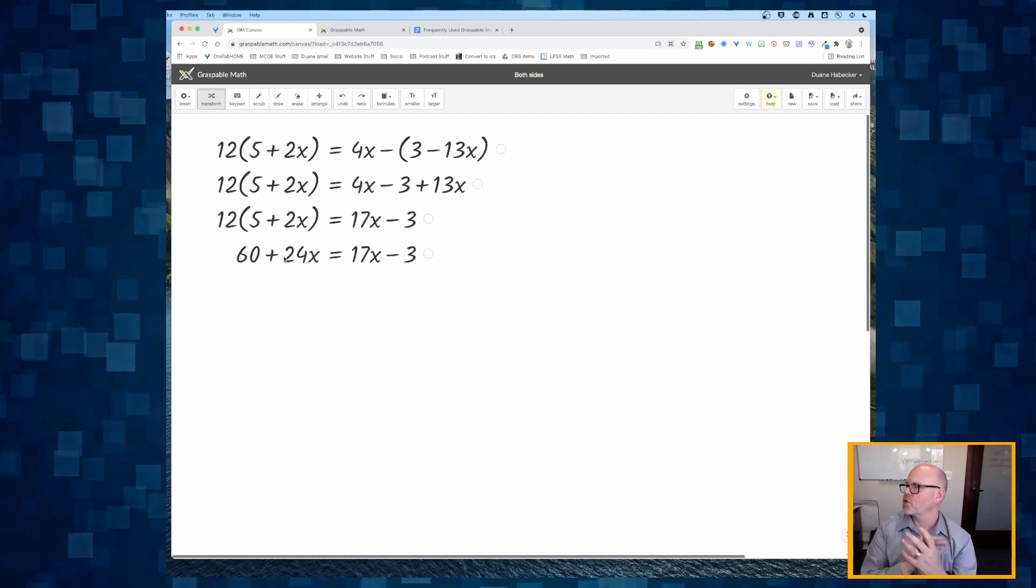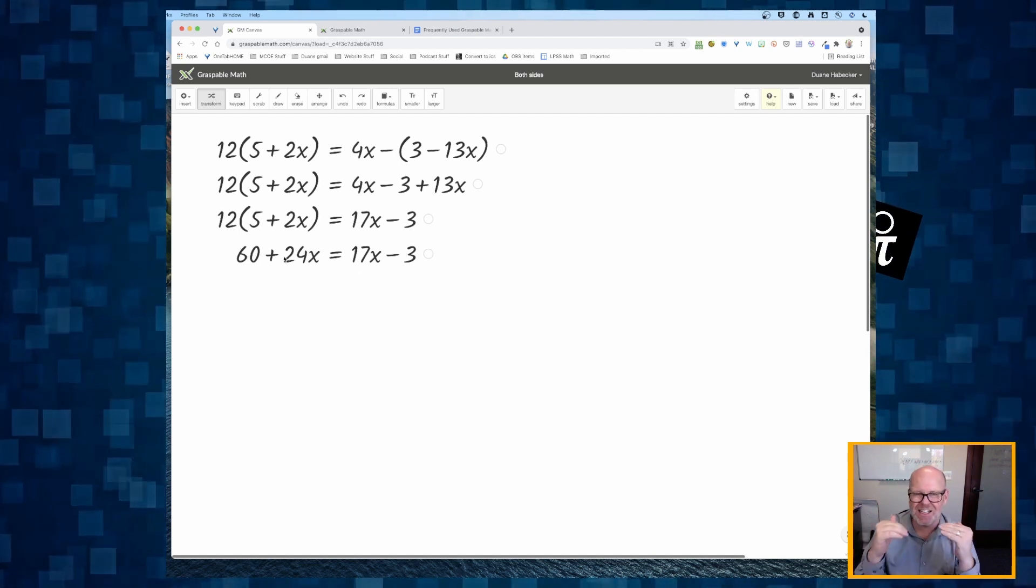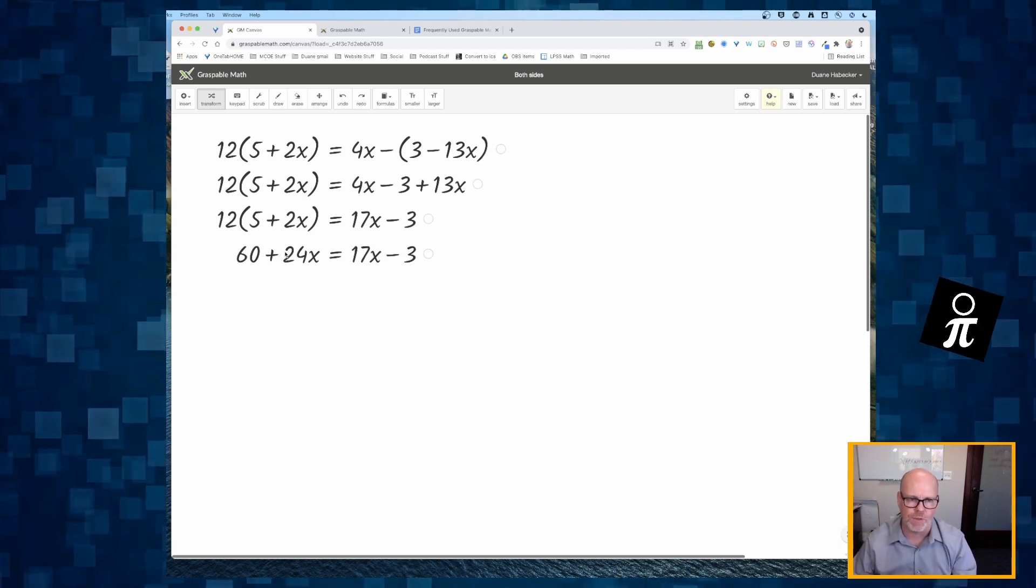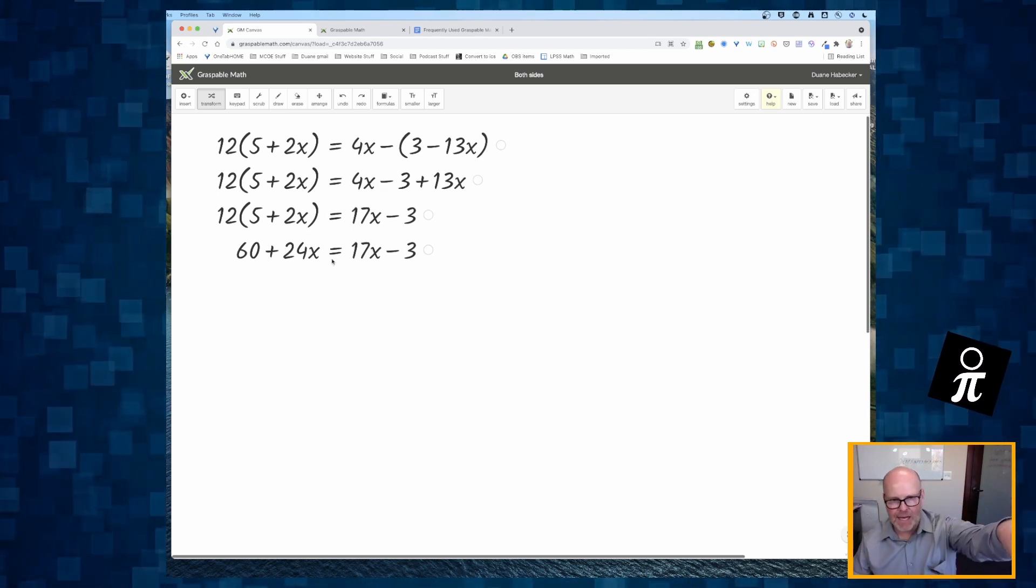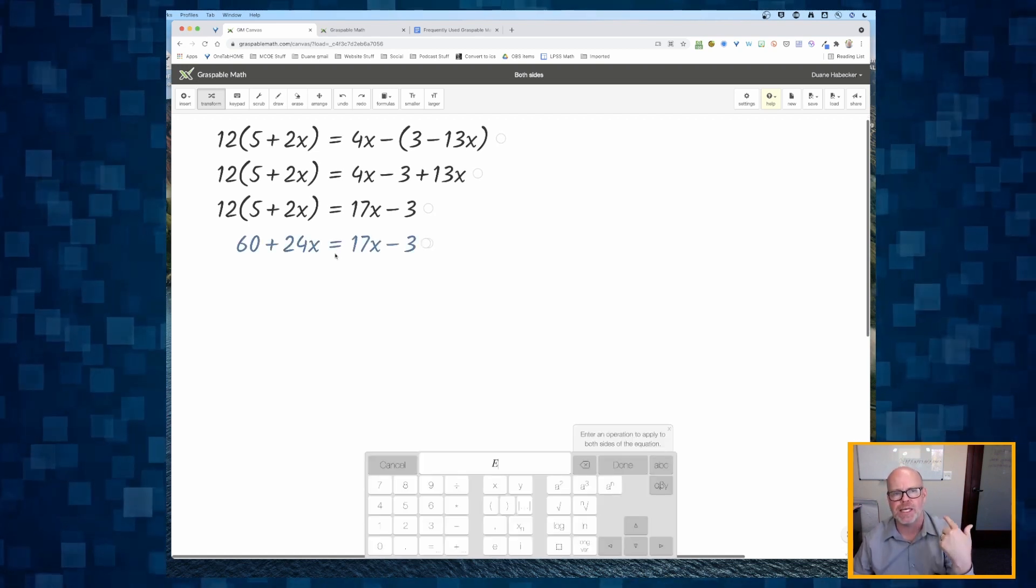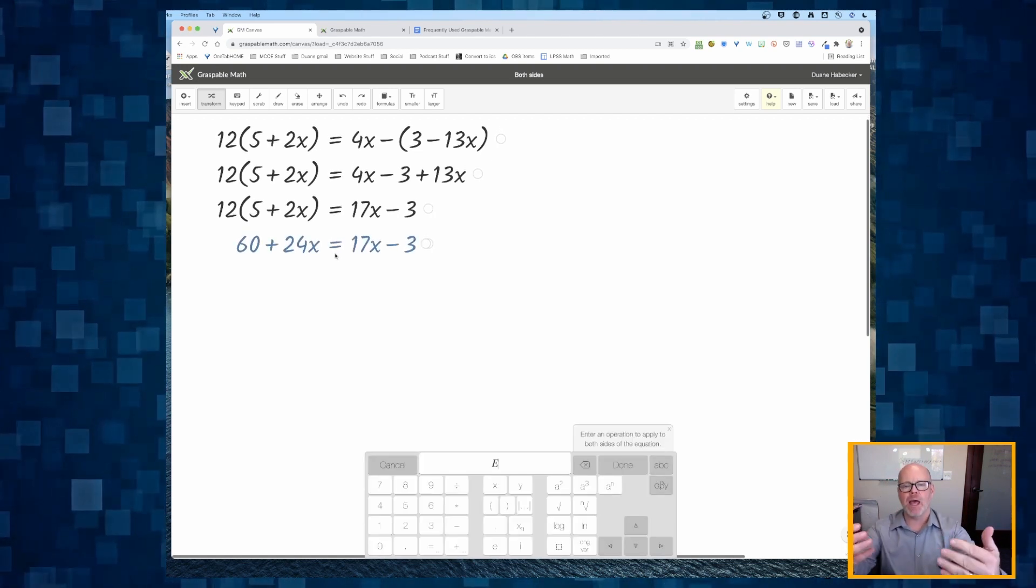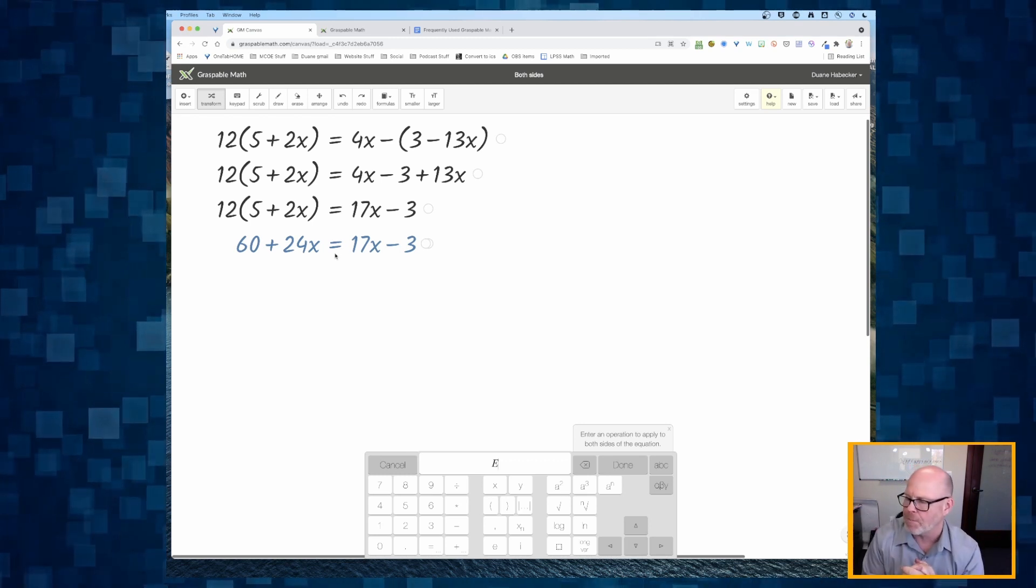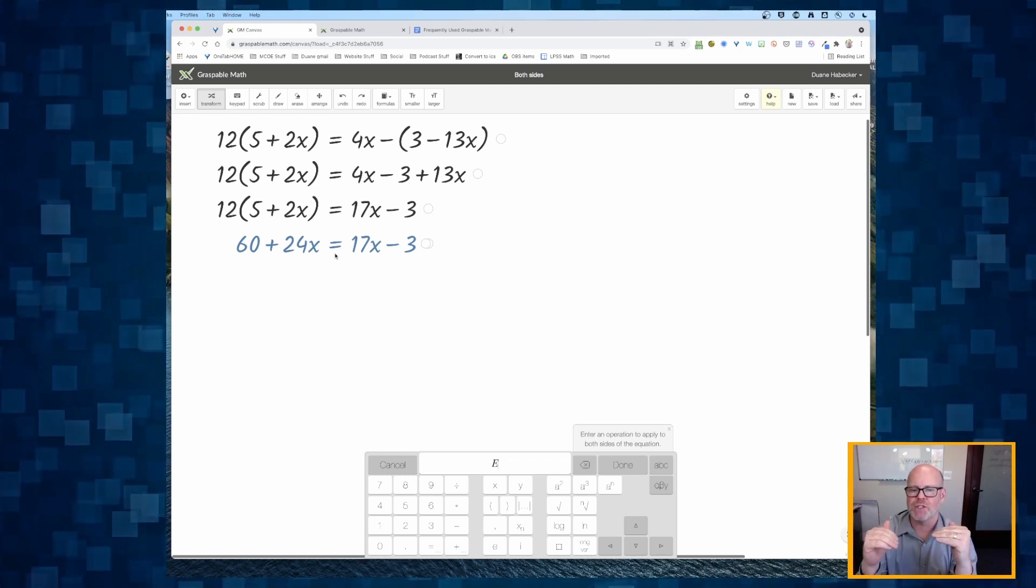Now, if you're a teacher who does not like that kind of interface, that's okay. I've got another option for you. So going back to that step right there, I'm going to click and hold on the equal sign. And I get a keyboard down below that pops up. It says, what do you want to do to the equation?